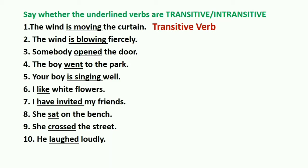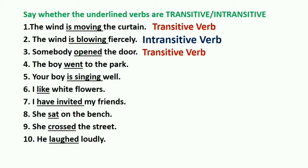'The wind is blowing what?' No answer. 'The wind is blowing whom?' No answer. You only get an answer to 'how' — so this is an intransitive verb. Next: 'Somebody opened what?' Somebody opened the door. You are getting an answer, so this is a transitive verb.